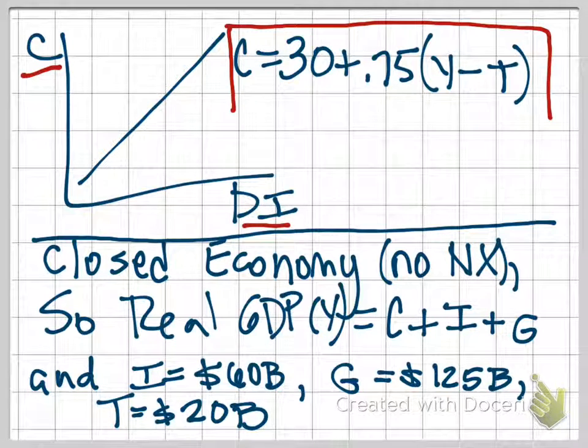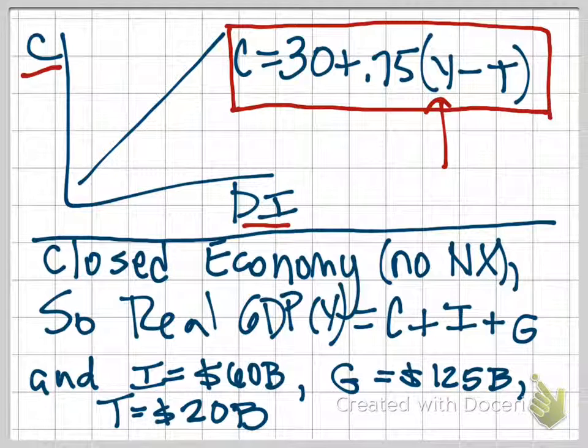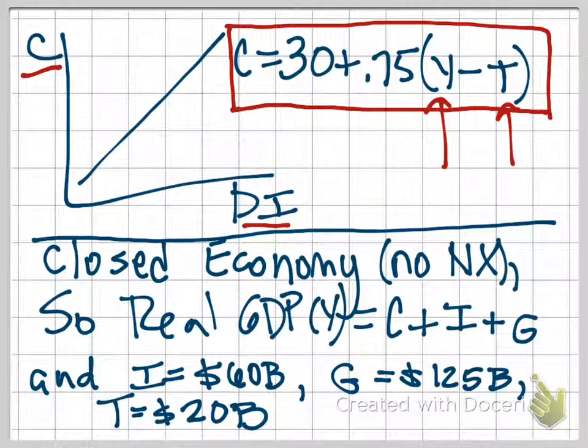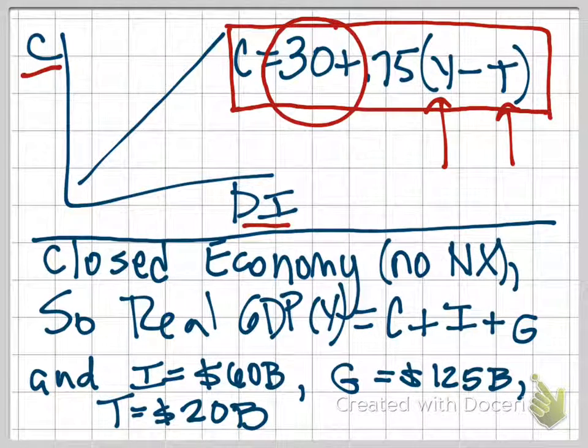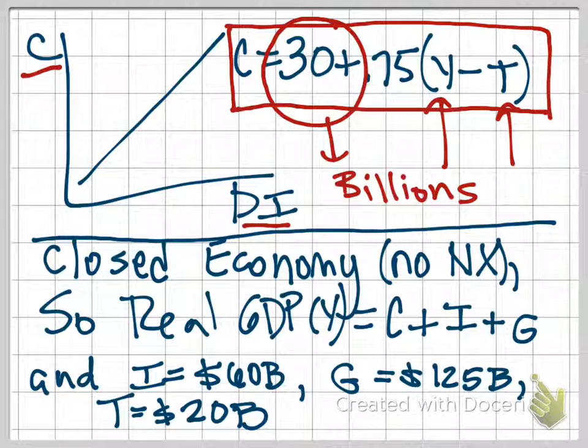Our consumption function here is given by C equals 30 plus 0.75 times Y minus T. Our Y is real GDP, and our T is net taxes. One thing I don't like about this problem is it fails to tell you that your 30 here is in denomination of billions of dollars, and you're going to need that later on to finish this question.